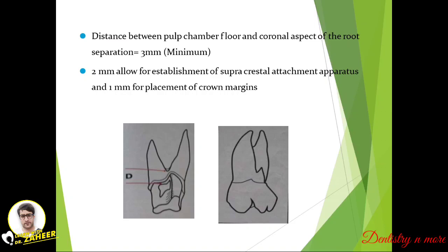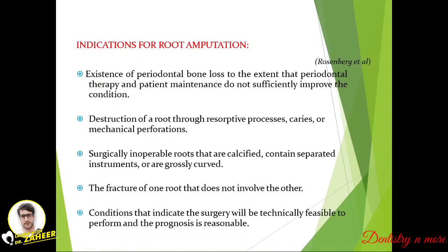The distance between the pulp chamber floor and the coronal aspect of the root separation should be 3 mm, with 2 mm width for the establishment of the supra-crestal attachment apparatus and 1 mm for the placement of crown margins. Indications for root amputation include: existence of periodontal bone loss to an extent that periodontal therapy does not sufficiently improve the condition; destruction of a root through resorptive processes, caries, or mechanical perforations; and surgically inoperable roots that are calcified, contain separated instruments, or are grossly curved.